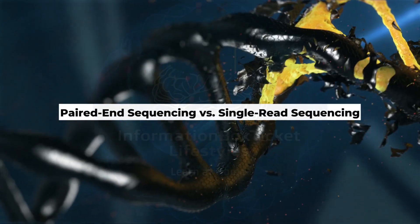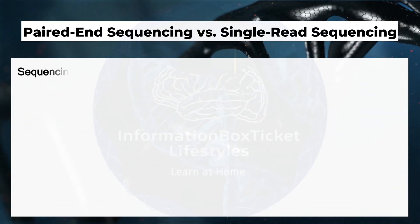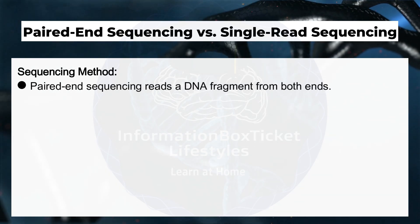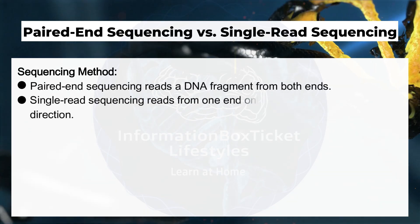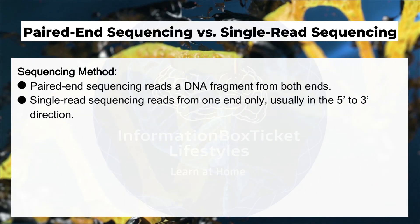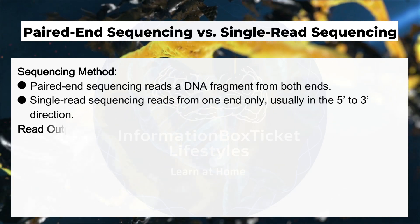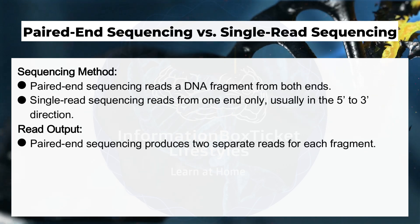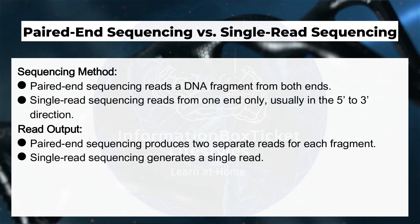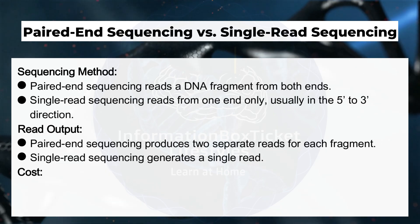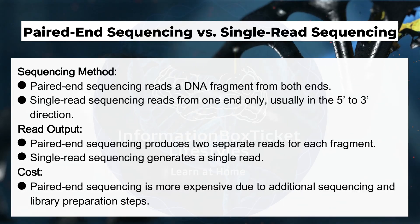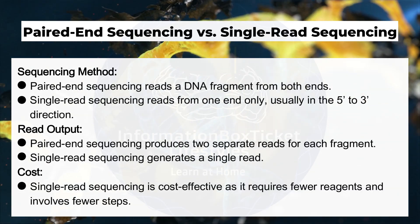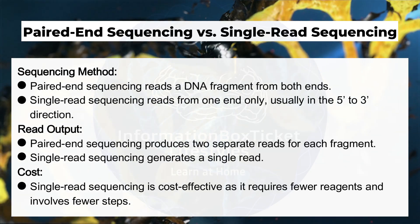Paired end sequencing versus single-read sequencing. Sequencing method: paired end sequencing reads a DNA fragment from both ends, while single-read sequencing reads from one end only, usually in the 5' to 3' direction. Read output: paired end sequencing produces two separate reads for each fragment, while single-read sequencing generates a single read. Cost: paired end sequencing is more expensive due to additional sequencing and library preparation steps, while single-read sequencing is cost-effective as it requires fewer reagents and involves fewer steps.